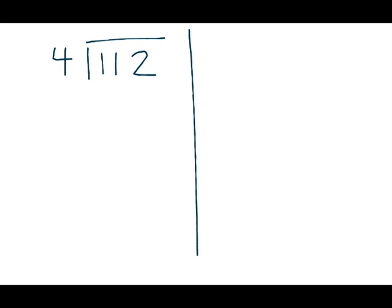First I think: are there at least 10 fours in 112? Yes, definitely. So I skip to the next easiest number, which is 20. Are there at least 20 fours in 112? Yes. So I write my first partial quotient of 20 over here. 20 fours is 80. I write 80 underneath 112 and subtract: 112 minus 80 gives me 32.